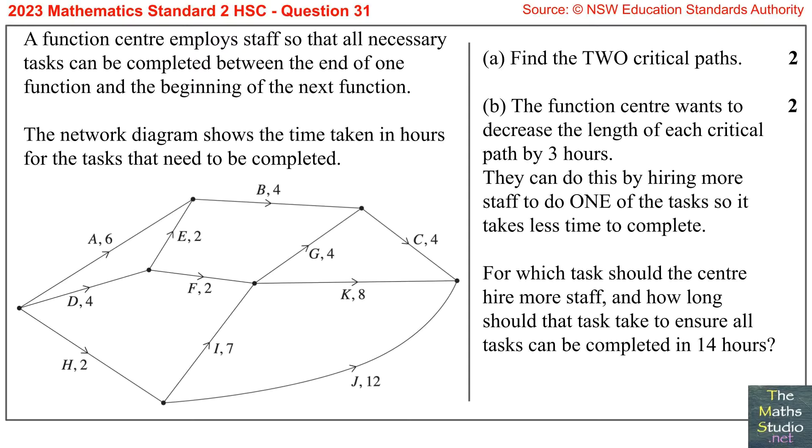Question 31. A function center employs staff so that all necessary tasks can be completed between the end of one function and the beginning of the next function. The network diagram shows the time taken in hours for the tasks that need to be completed. Part A: Find the two critical paths.